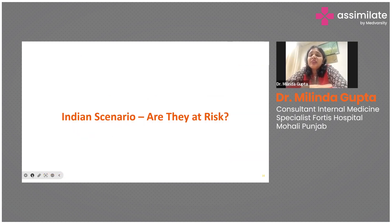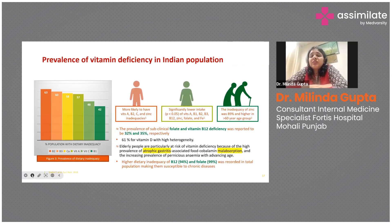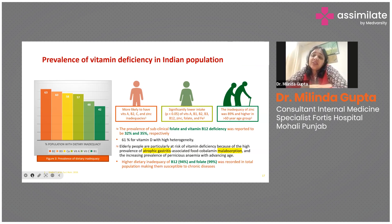Considering the Indian scenario, various studies show that vitamin deficiencies are quite common in our population. The most common are folate, vitamin B12, and vitamin D deficiencies. These three are very commonly seen in the Indian population, and their incidence tends to increase with age due to reasons such as atrophic gastritis or malabsorption.